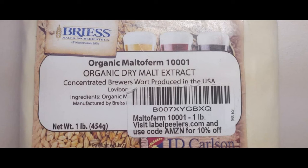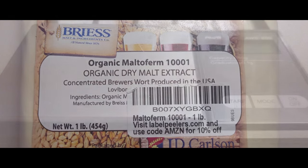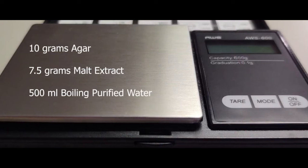We have since come up with a standard MEA recipe that works to promote the onset of rhizomorphic growth while reducing the chance of contamination by using 10-gram agar, 7.5-gram malt extract to 500 milliliters of purified water.